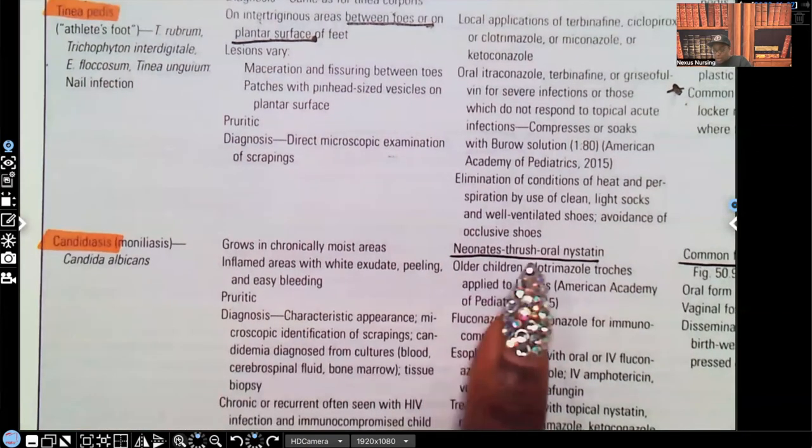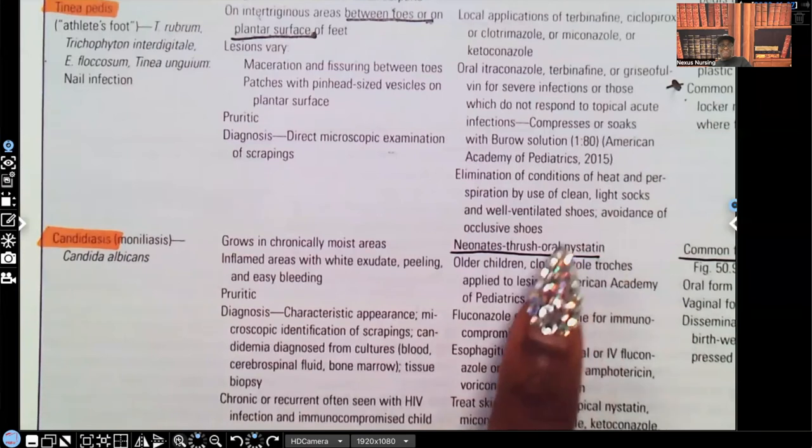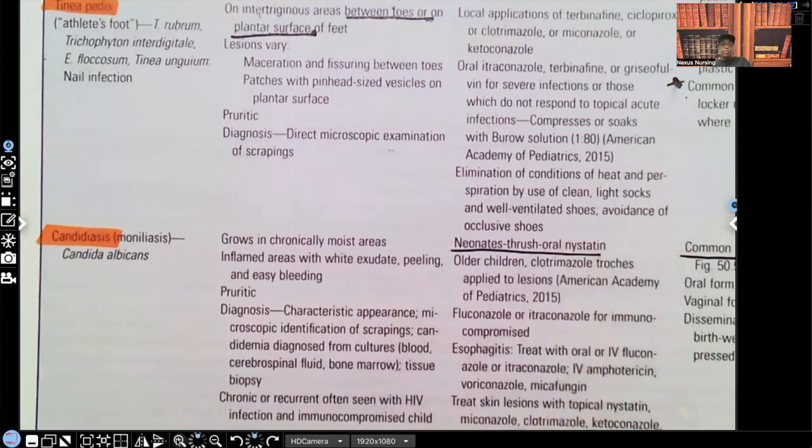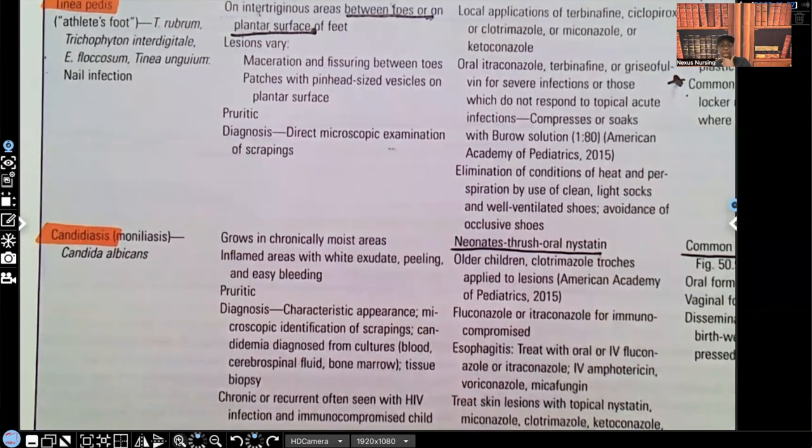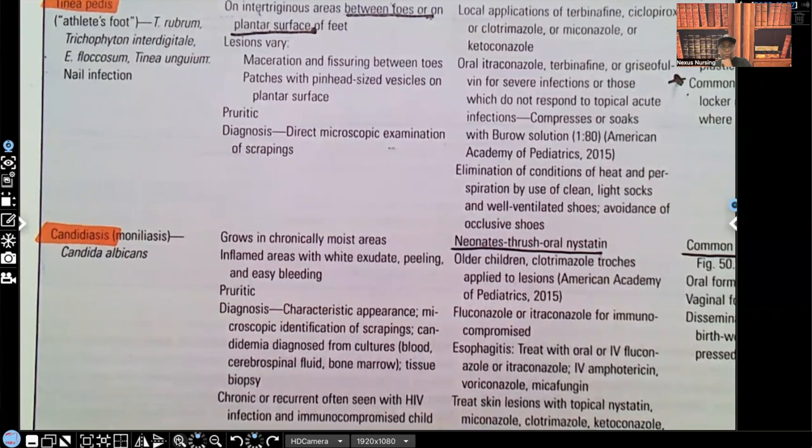In neonates, thrush, oral nystatin. Nystatin, that's our key. Candidiasis, we either tend to see this in the mouth and that's the thrush, or we tend to see this in the diaper area. That's also known as diaper dermatitis, right? And they'll get nystatin. They'll either get nystatin orally in the mouth for the thrush.